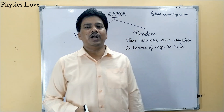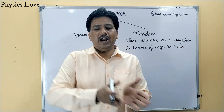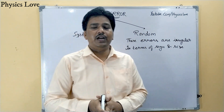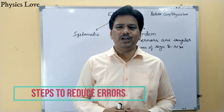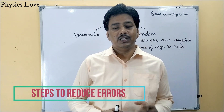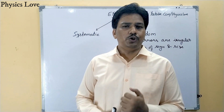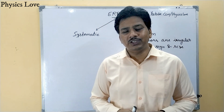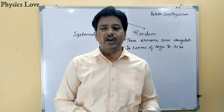There is one more type of error called least count error, which occurs in both random and systematic errors. We will discuss it in a separate video lecture as it requires some instruments to understand. Now, how can we reduce errors? Step one: use instruments with higher precision. Step two: improve experimental techniques. Step three: perform the experiment several times and find the arithmetic mean, because the mean value approaches the true value. In the next video, we will discuss how to calculate relative error and percentage error.